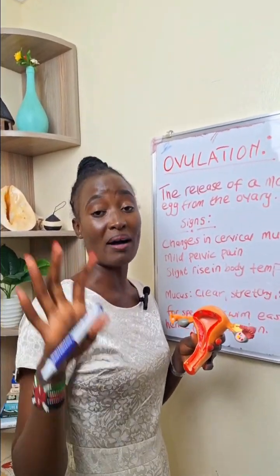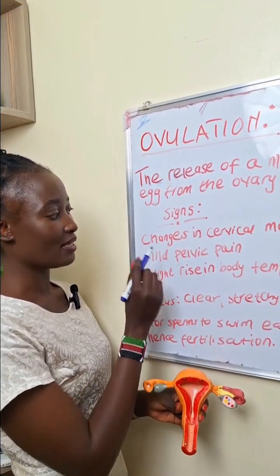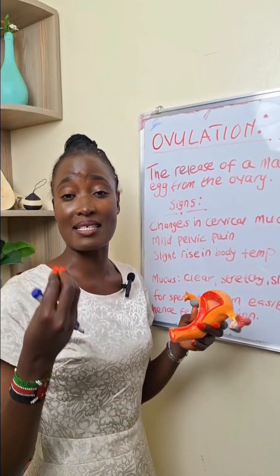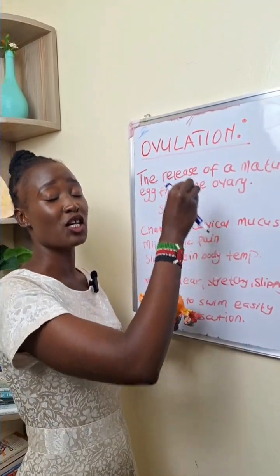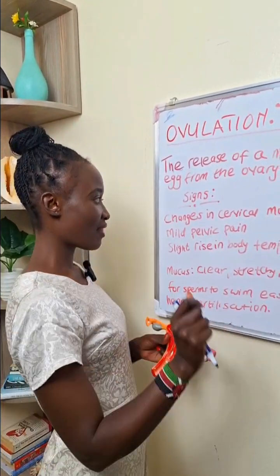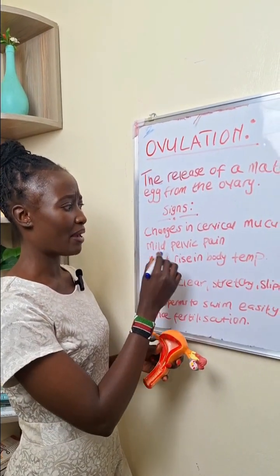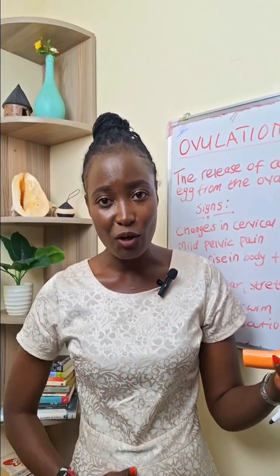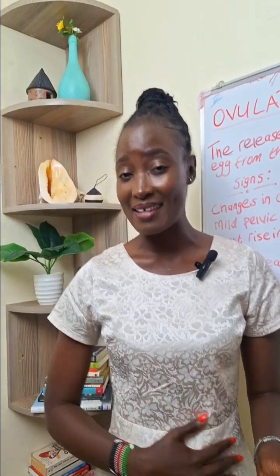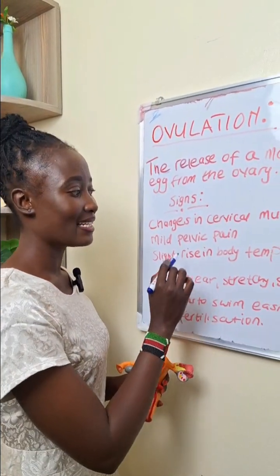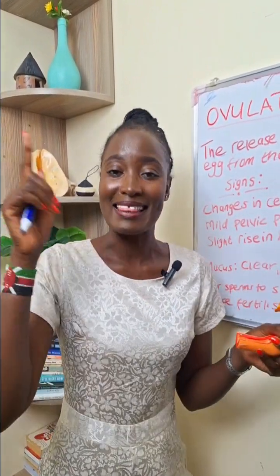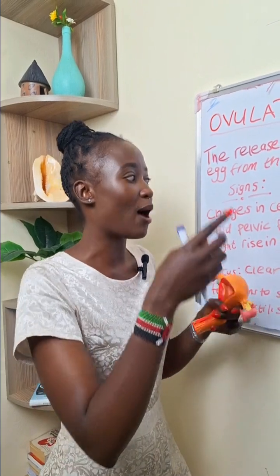Now let us look at some of the signs of ovulation — how do you know as a woman that you are ovulating? Number one, there are changes in cervical mucus. Ladies, we do release cervical mucus, and during ovulation there are changes in it. Another sign is pelvic pain — you'll start feeling a little bit of pain in this particular area right here. There is also a slight rise in body temperature, like you feel too hot.